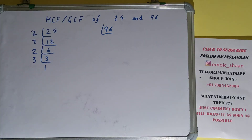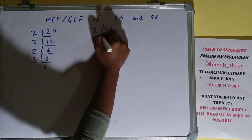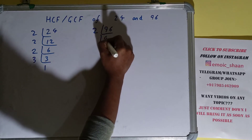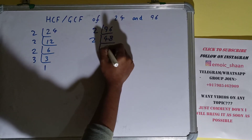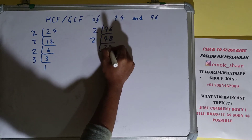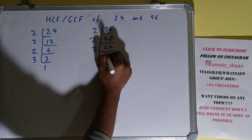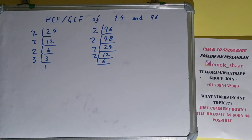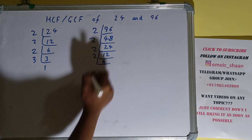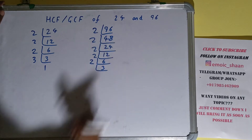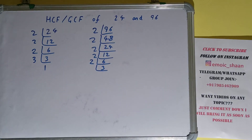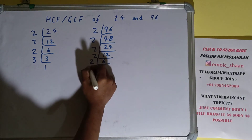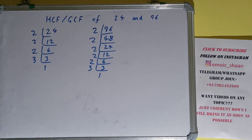Now we do the same with the number 96. Is 96 divisible by 2? Yes, we'll have 48. 48 is again divisible by 2, we'll have 24. 24 is again divisible by 2, we'll have 12. 12 is again divisible by 2, we'll have 6. 6 is again divisible by 2, we'll have 3. Is 3 divisible by 2? No — 3 is a prime number, so it is only divisible by itself, and we'll have 1. So we are done with the prime factorization step.